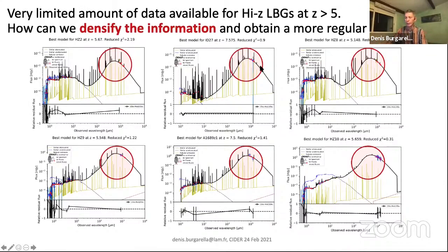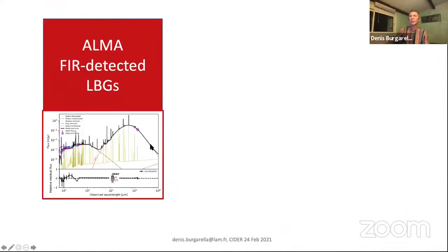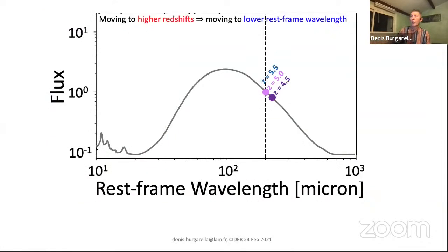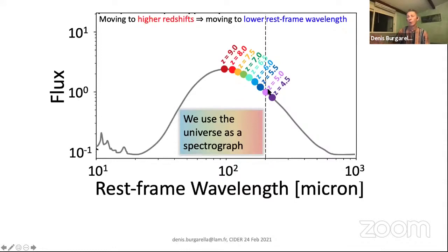One way would be to observe more and deeper, but we know that's not very easy and even difficult or impossible for some objects. So what we tried to do is select a sample detected with ALMA, and then we use the redshift as a spectrograph. Because when you observe in a given band with ALMA or NOEMA, as the redshift changes, you sample different parts of the infrared SED. This is very powerful because it allows you to get information.